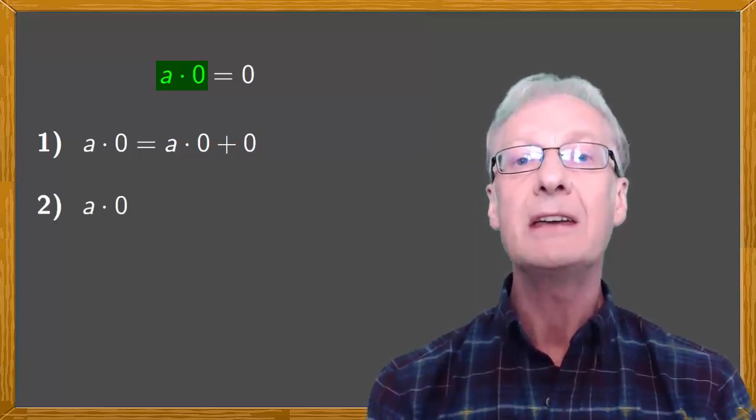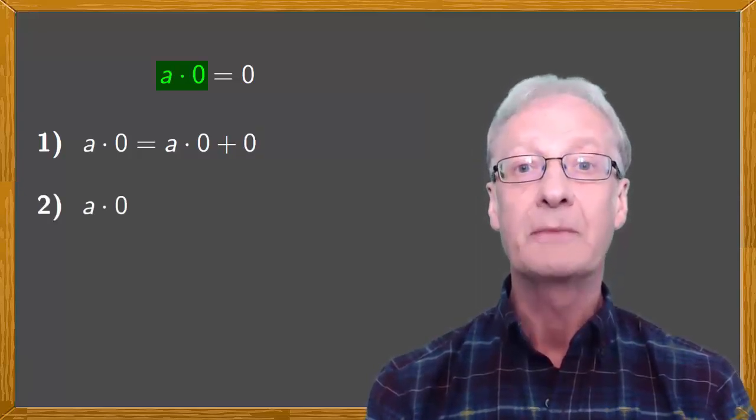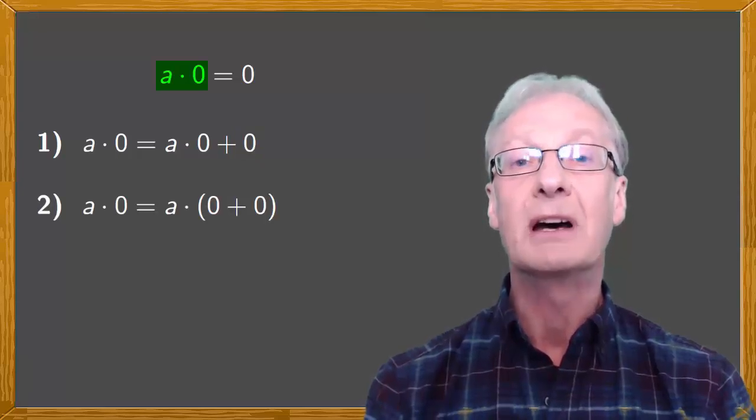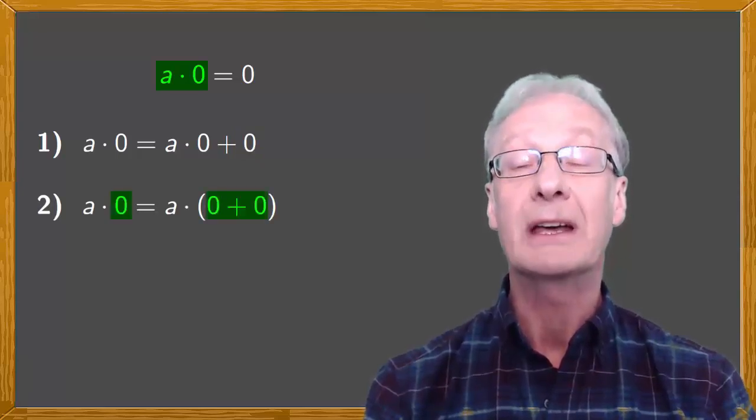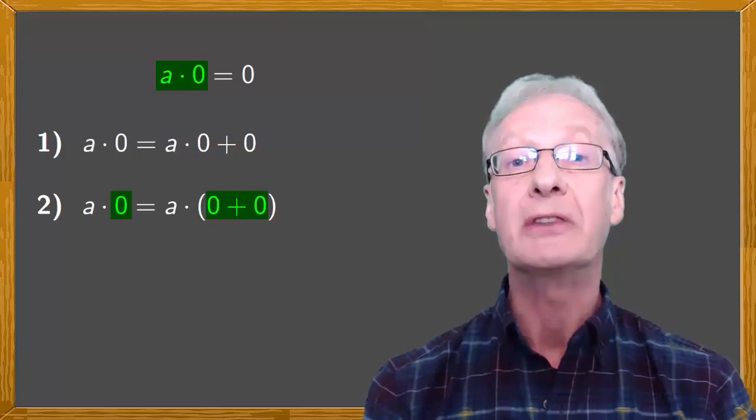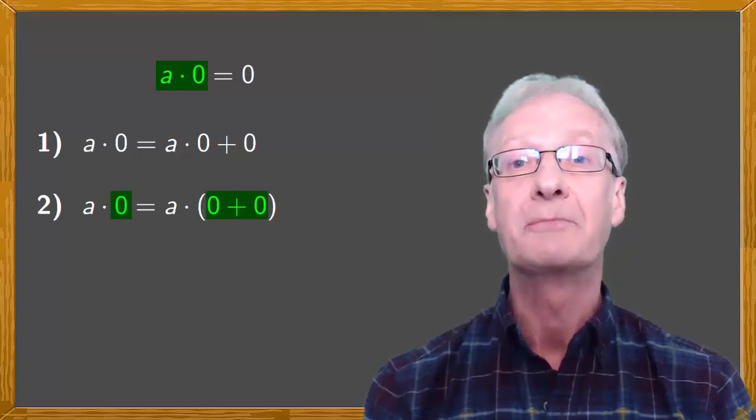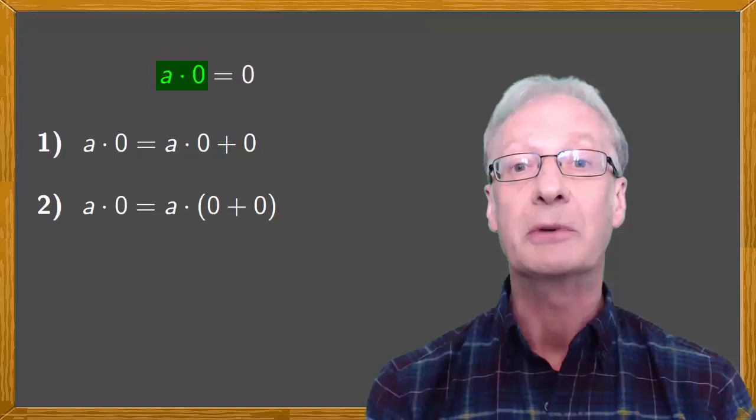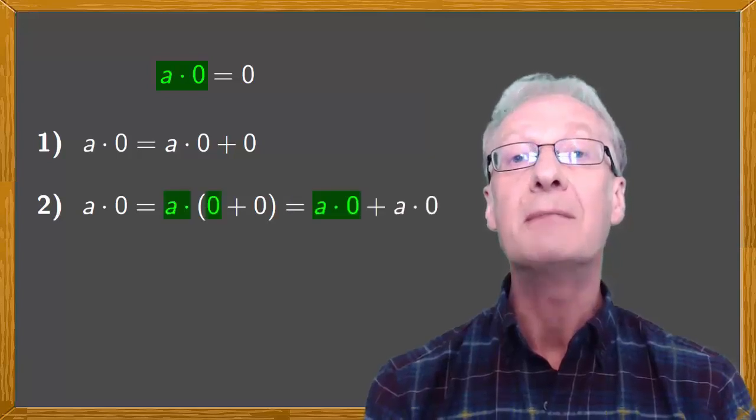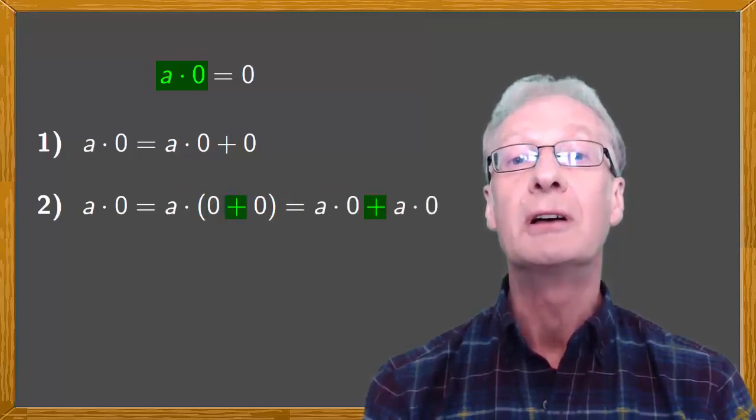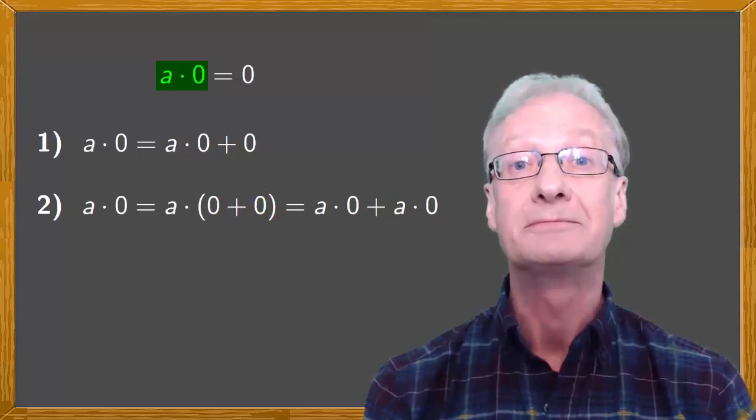Second, a multiplied by zero is a multiplied by zero plus zero. Again, because zero is the neutral element of the sum. Now, we apply the distributive property to give a multiplied by zero plus a multiplied by zero.